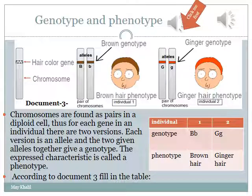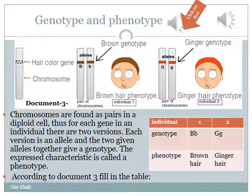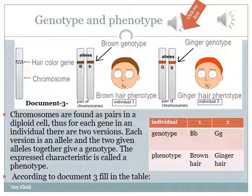In a diploid cell, the chromosomes are found as pairs, and for each chromosome there is a copy or a version of this gene. For example, the hair color gene is found in two alleles in a pair of chromosomes. The two alleles are capital B and small b in the brown individual, and they are different in the second individual.